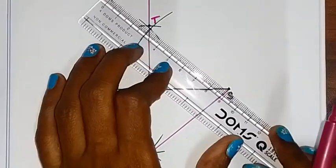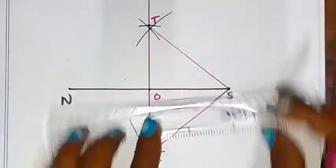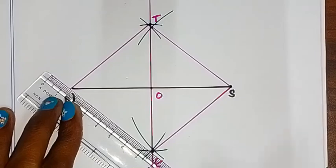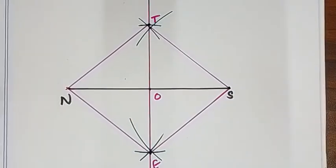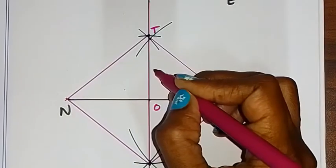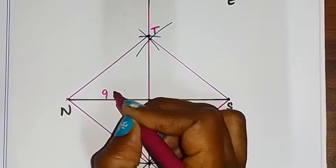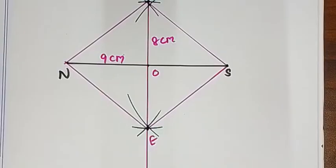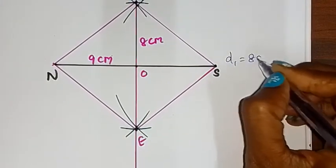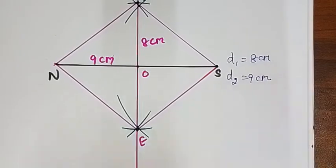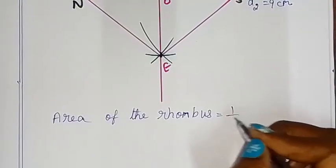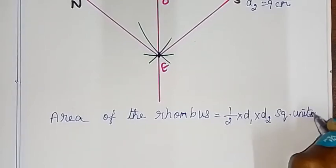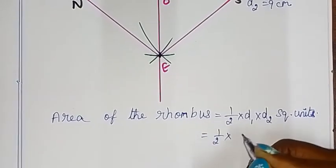Now construct the rhombus NEST by joining NT, TE, ES, and SN. We know the diagonal values: D1 equals 8 cm and D2 equals 9 cm. The area of the rhombus equals half into D1 into D2 square units, which equals half into 8 into 9 square centimeters.